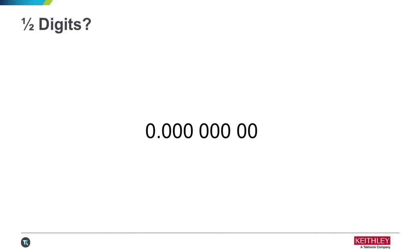Another common question online is what are half digits when we talk about 5.5, 6.5, or 3.5-digit DMMs. Eight and a half digits is the most you'll see on a DMM — beyond that you reach the noise limitation of measurement science. Looking at eight and a half digits here, that first digit is the half digit. What that half digit means is it can only be a zero or a one, whereas all whole digits can be any digit from zero through nine.